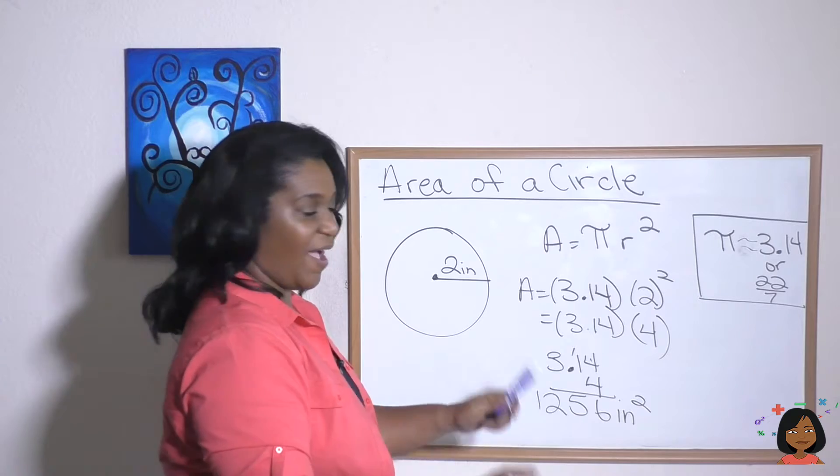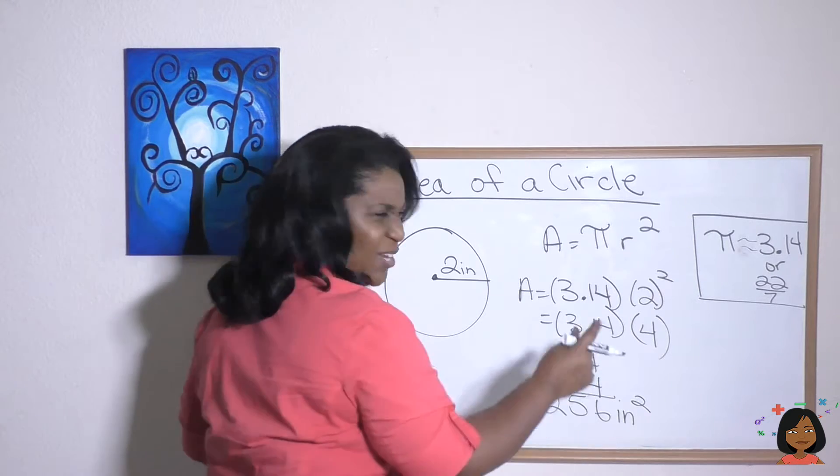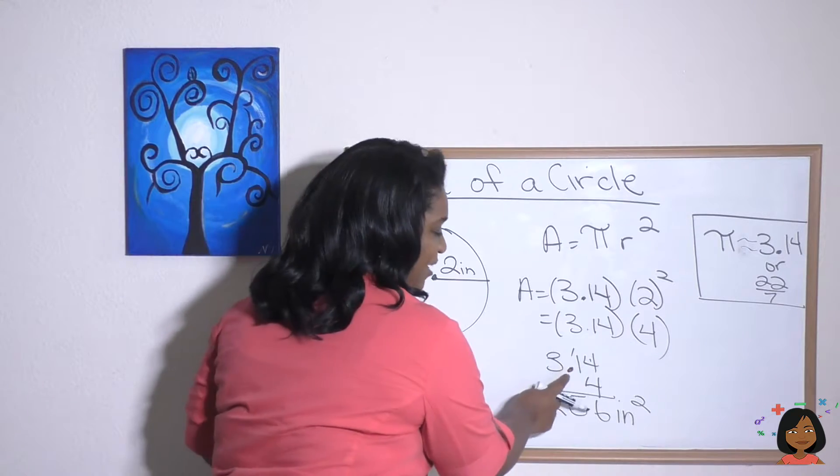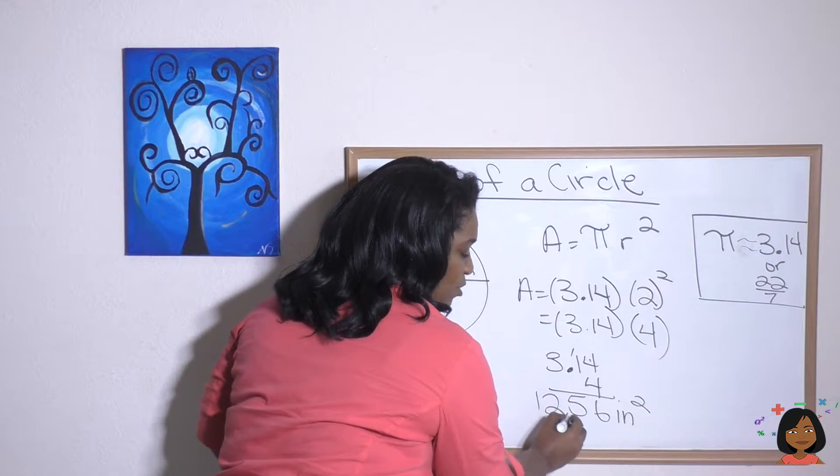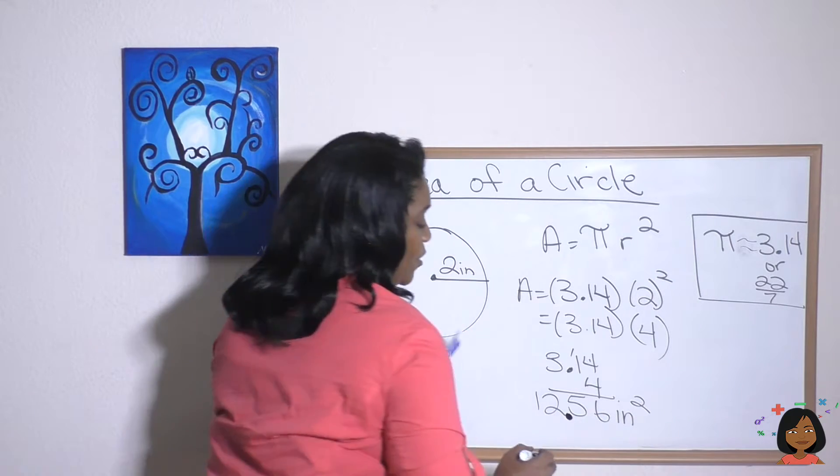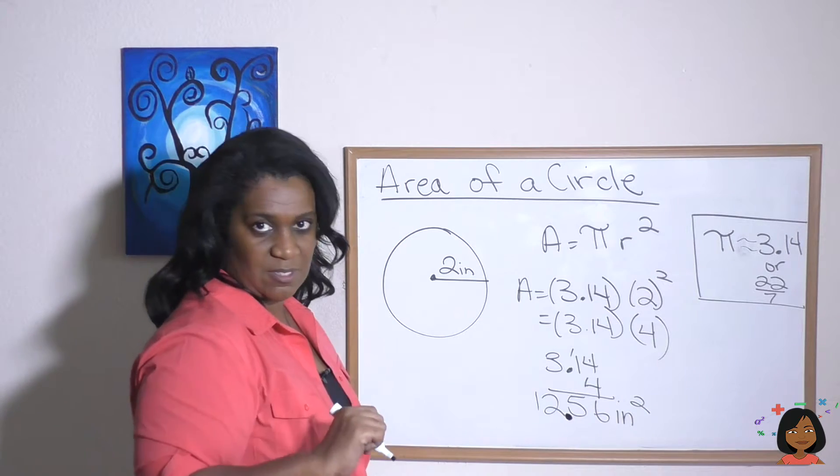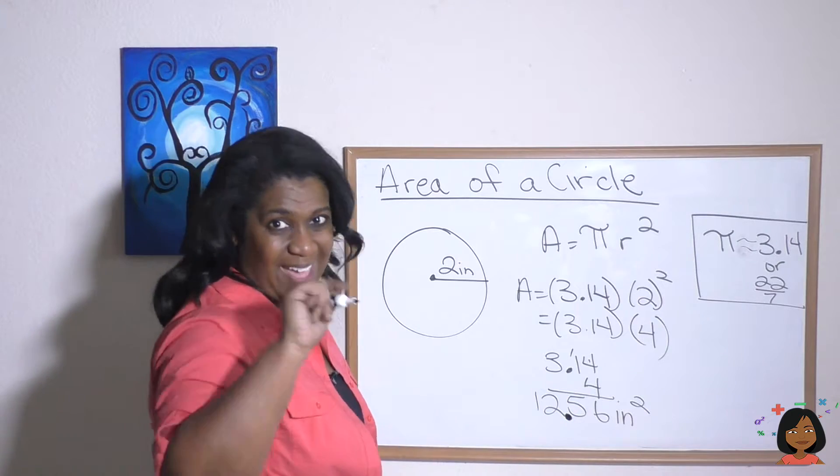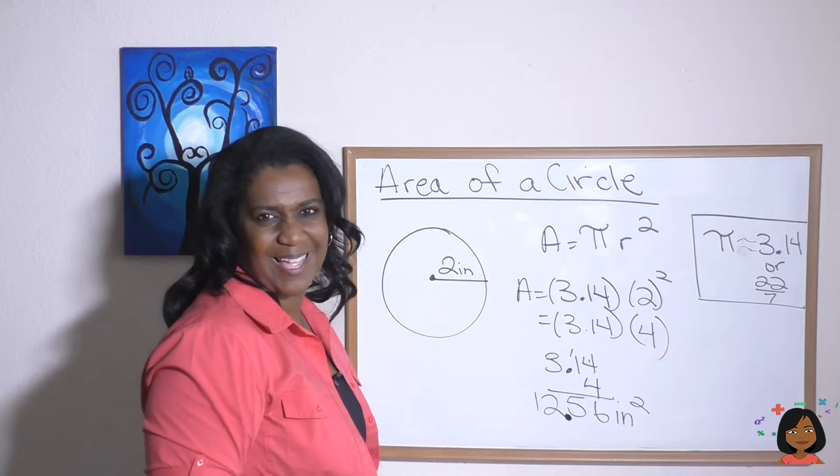Oh wait, I went too fast. I forgot about my decimal. I got to put my decimal point in. There we go. 12.56 inches squared. Now that's my answer. Never forget that decimal.